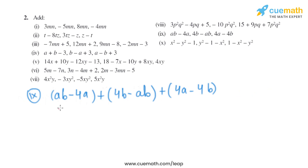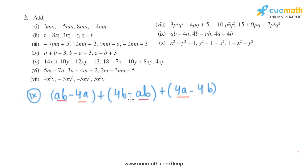The ninth part expressions are ab minus 4a, 4b minus ab, and 4a minus 4b. The like terms with ab: plus ab minus ab gives 0. The terms with a: minus 4a plus 4a gives 0. The terms with b: 4b minus 4b gives 0. So the final answer is 0.